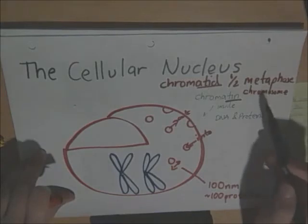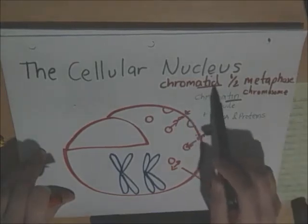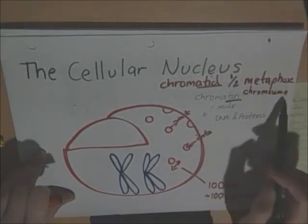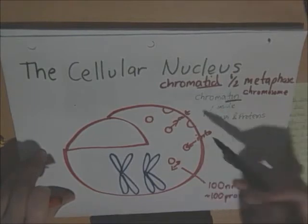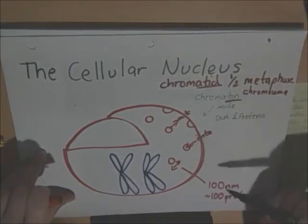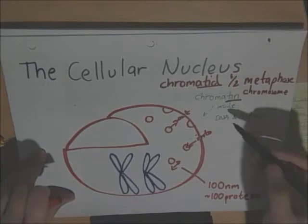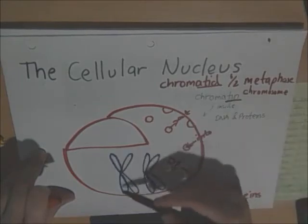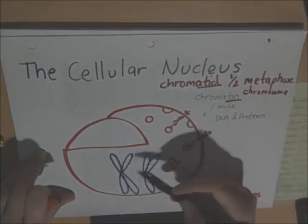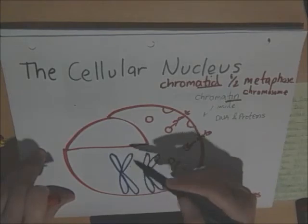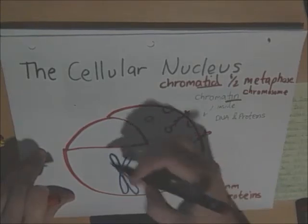Chromatin is the DNA and the proteins, this, wound up inside of the nucleus. While the chromatid is one half of a metaphase chromosome. That's really important. Chromatid is half a metaphase chromosome. And chromatin is the DNA and the proteins, rolled up all together.